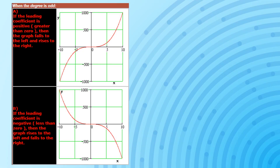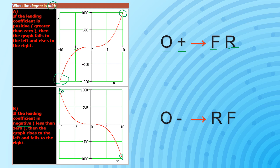But if the degree of a given polynomial function is odd and that odd degree is accompanied by a positive leading coefficient, the end behavior of the graph will fall on the left side but rise on the right side. But if that odd degree is accompanied by a negative coefficient, it will rise on the left side but fall on the right side. Keep in mind that whenever the degree is odd, the behavior on the left side is different from the behavior on the right side.